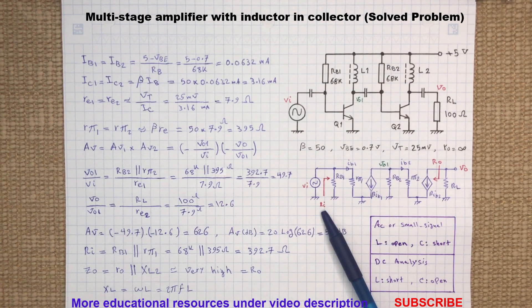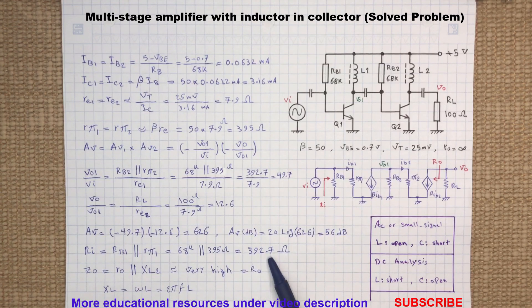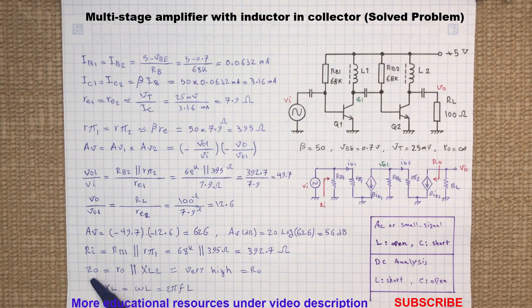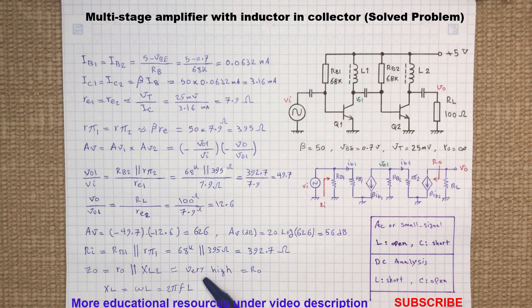The input resistance of the amplifier is the resistor RB1 in parallel with the RA-pi1. And the output resistance seen from the load resistor will be the collector emitter resistance RO in parallel with the inductive reactance of L2, which both assumed to be very high.